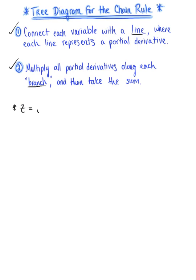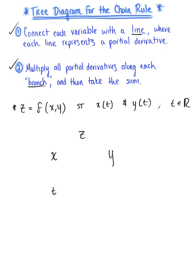Step one asks us to connect each variable with a line. We have variable z, which is a function of x and y; x is a function of t, and y is a function of t. So we draw a line from z to x, representing the partial derivative of z with respect to x, then a line from x to t, representing the derivative of x with respect to t. For the other branch, a line from z to y represents the partial derivative of z with respect to y, and a line from y to t represents the derivative of y with respect to t.